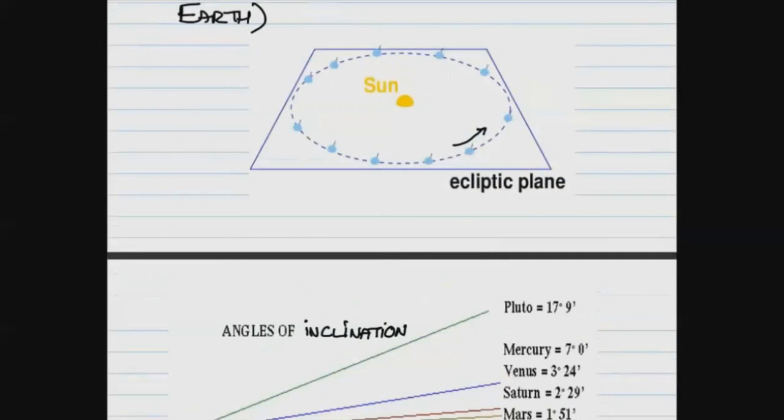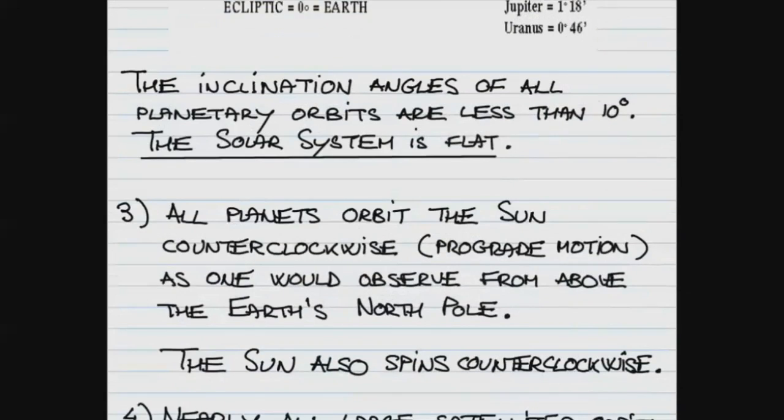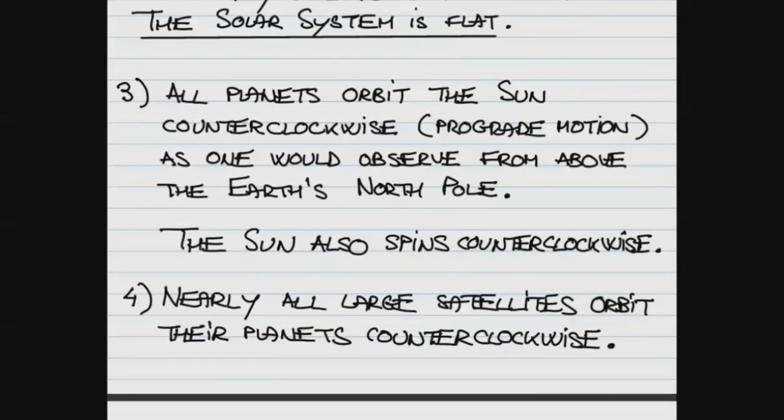Next, just like the Earth orbits the Sun in the counterclockwise direction as seen from above the Earth's North Pole, all the other planets do the same thing. They all revolve around the Sun in the counterclockwise, or as it is often said, prograde direction. And it turns out that the Sun itself spins in that counterclockwise direction. Moreover, if you look at the motion of the satellites of various planets in the solar system, nearly all large satellites orbit their respective planets in counterclockwise direction.